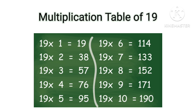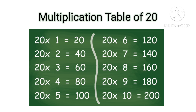Table of 19: 19×1=19, 19×2=38, 19×3=57, 19×4=76, 19×5=95, 19×6=114, 19×7=133, 19×8=152, 19×9=171, 19×10=190.